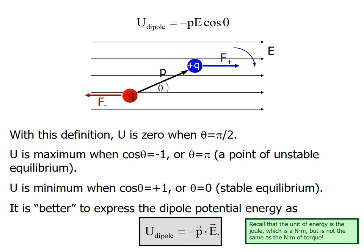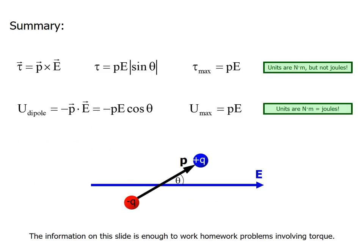This is the summary of the energy of the dipole. The energy of the dipole formula we finalized: U dipole equals minus p dot E. The torque is the dipole moment cross electric field, which equals PE sin theta. The maximum value of torque equals PE when sin theta equals one. When cos theta equals minus one, we have maximum energy value.